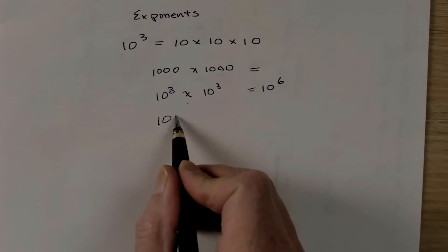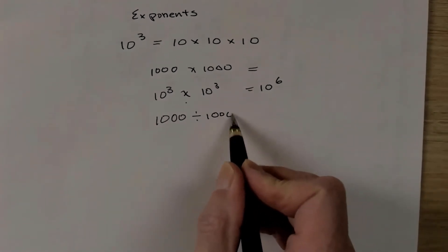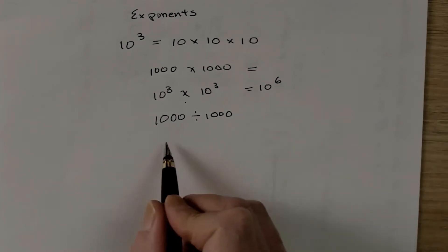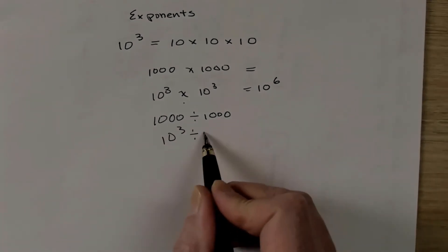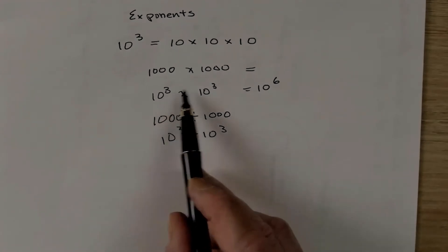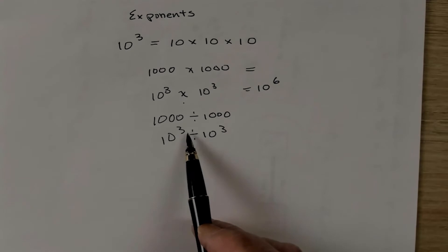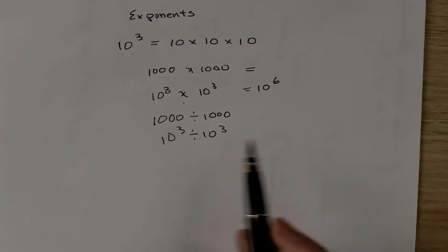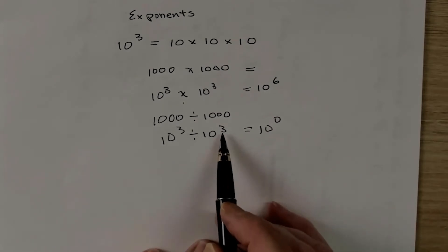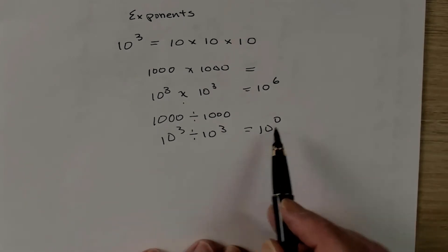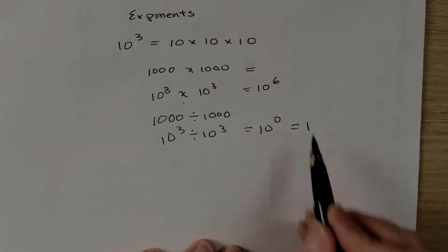If we were to divide 1,000 by 1,000, that's the same as dividing 10 to the 3 by 10 to the 3. If we added when we multiply, it would follow that we subtract when we divide. That's the beauty of the logarithms. So that would equal 10 to the 0, because 3 minus 3 equals 0. Now any number that's raised to the power of 0 equals 1.